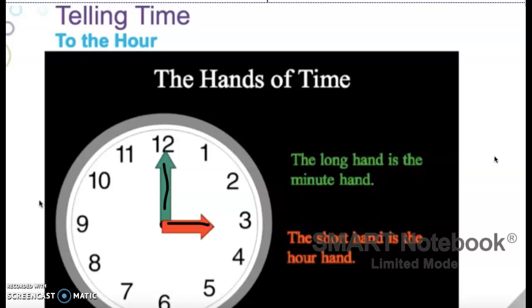If you look at the clock, you see two hands. The green one, which is the longer of the two, is called the minute hand. The red arrow is pointing to the three and that's called the hour hand and is the shorter of the two.